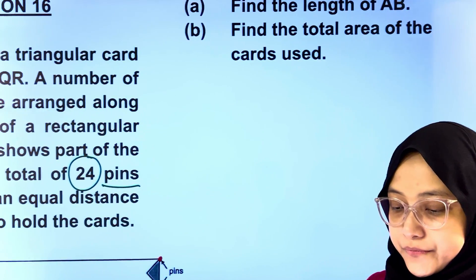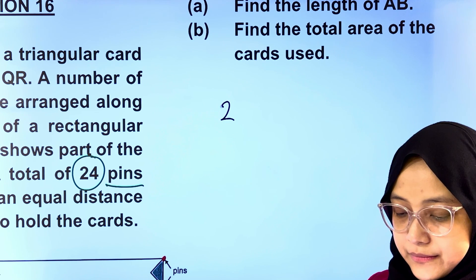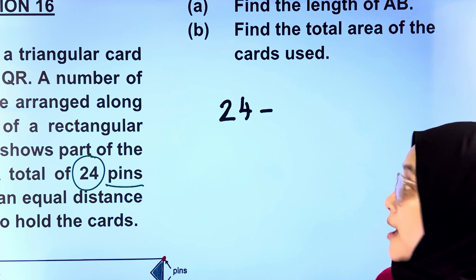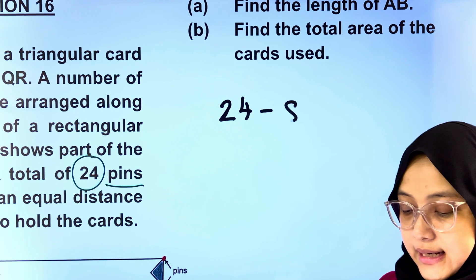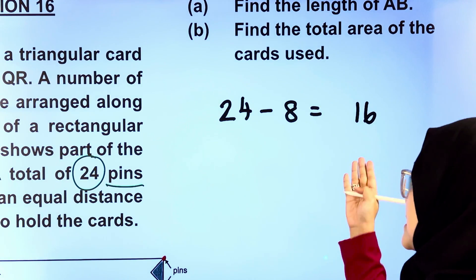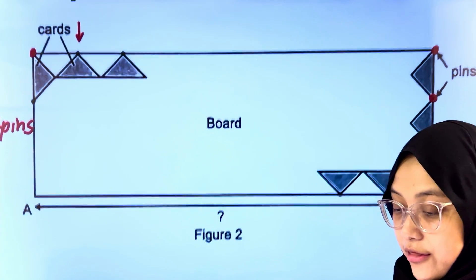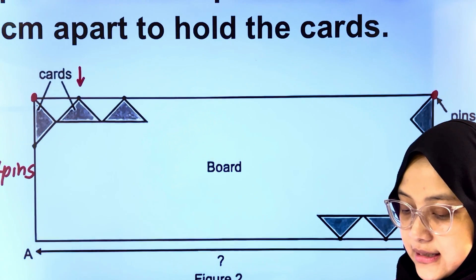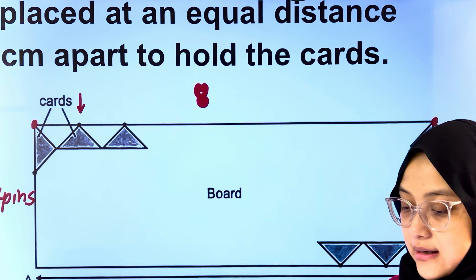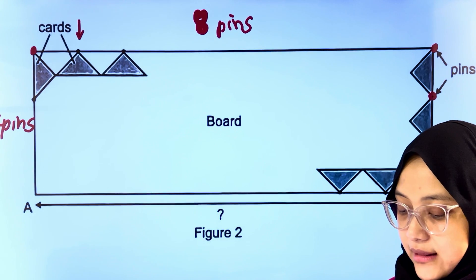So how many pins were being used along the length of the board? Let's calculate together. In total, there were 24 pins minus eight, and that gives us 16 pins. 16 pins were placed along the length, which means eight pins at the top and eight pins at the bottom.